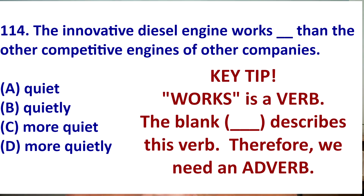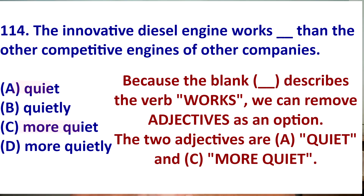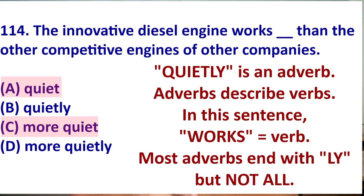We can see that the blank is describing the verb 'works.' Here, 'works' is a verb — the subject is 'diesel engine' and then the verb is 'works.' Because of this, we can eliminate the adjective 'quiet.' We use 'quiet' to describe a noun, but we are describing the verb 'works,' so we need an adverb. So 'quietly' is what describes the verb.